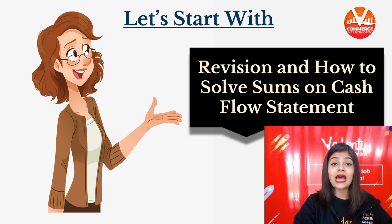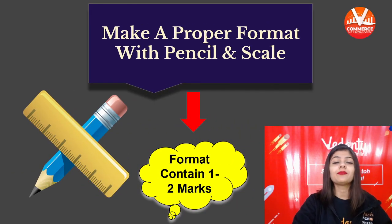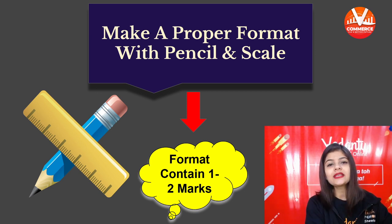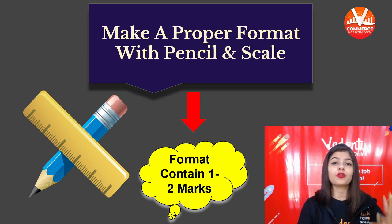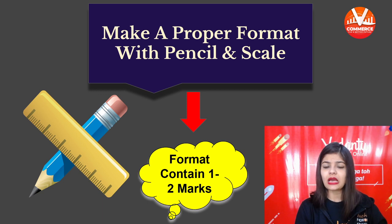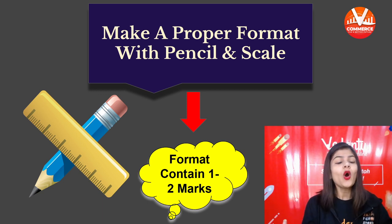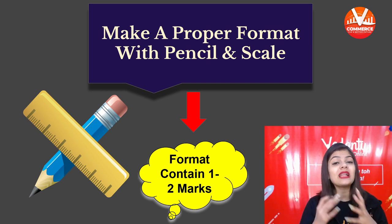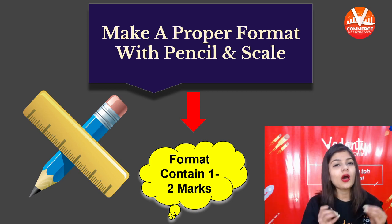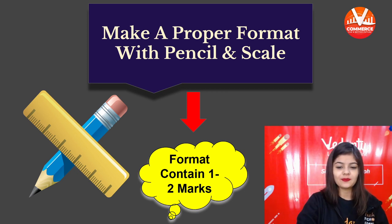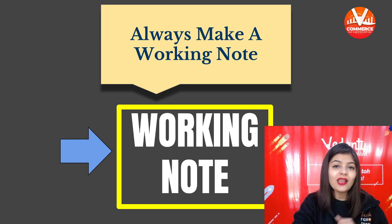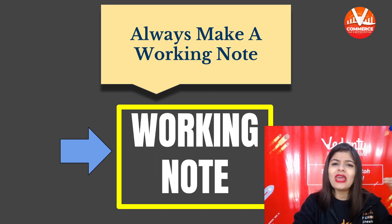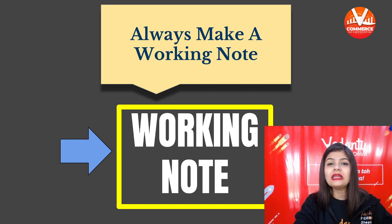Let's start with revision and how to solve questions of the Cash Flow Statement. The most important bonus point: always make a proper format with a pencil and scale whenever you are preparing the format of cash flow from operating activity, fixed asset account, accumulated depreciation account, or any ledger. Make clear lines using pencil and scale — don't make rough lines. Also, always make a working note whenever you are calculating the profit or loss on sale of machinery.